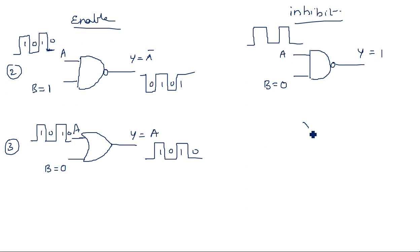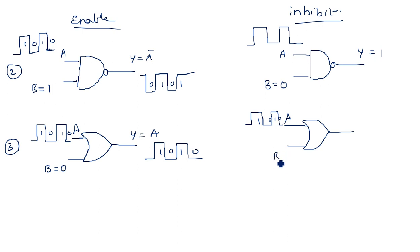Now consider the same OR gate with B fixed to one — inhibit operation. Input A is one-zero-one-zero and B is fixed to one. When one input of OR gate is one, output is always one. The only way to get zero is zero-zero, but that can never happen since B is fixed to one.